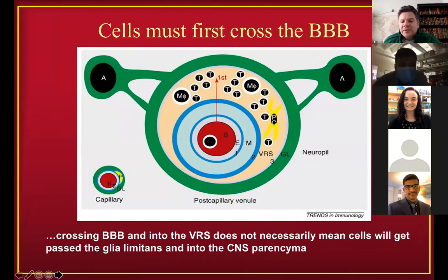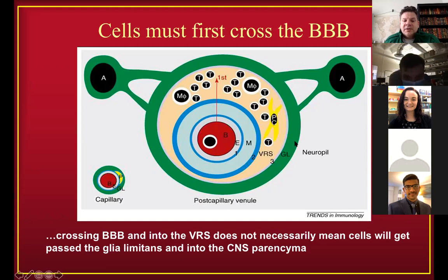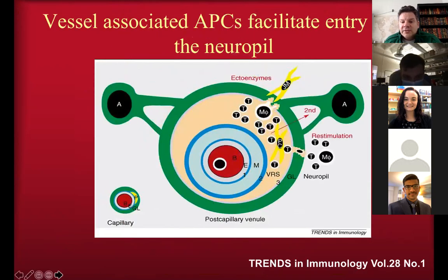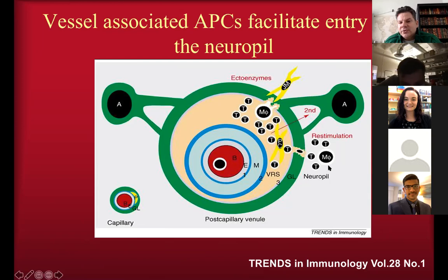Cells must cross two layers of blood vessel to get into the perivascular space, and then must get through the glia limitans — the main barrier to entering brain parenchyma. To get through it requires enzymatic activity, specifically matrix metalloproteases. Once an immune cell gets through, it looks for restimulation — seeing that antigen signal again once past this barrier.